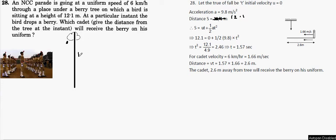At a particular instant, the bird drops a berry. The berry starts to drop. Which cadet will receive the berry on his uniform? The cadets are moving with constant speed which is 6 kilometers per hour. So convert it to meters per second: 6 times 5 by 18 will give you about 1.66 meters per second.